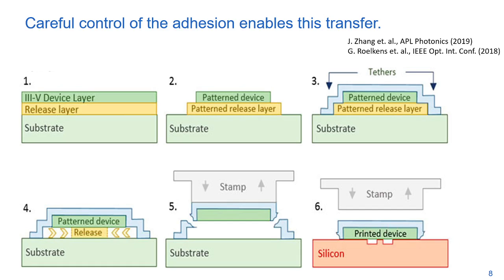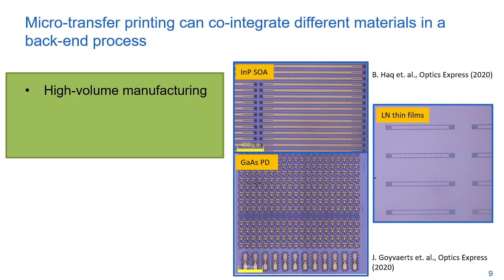Since the transfer can be done in parallel and automated using pattern recognition, it makes micro-transfer printing a high-volume manufacturing technique. Contrary to wafer bonding, the coupons in transfer printing are exactly the size you need.